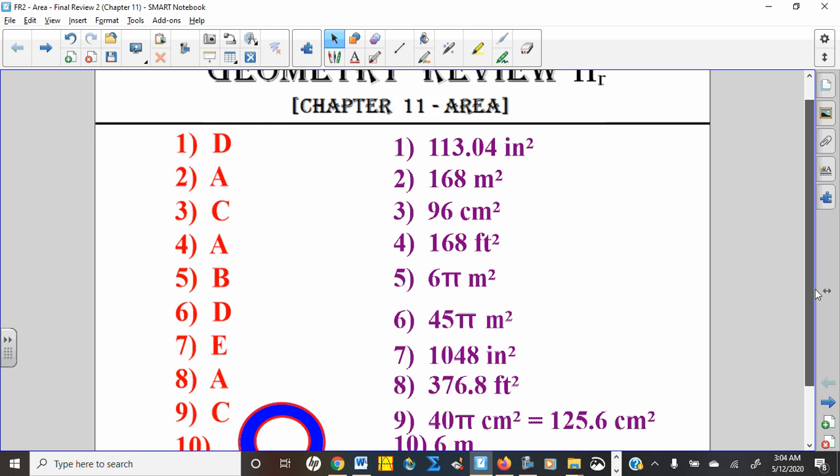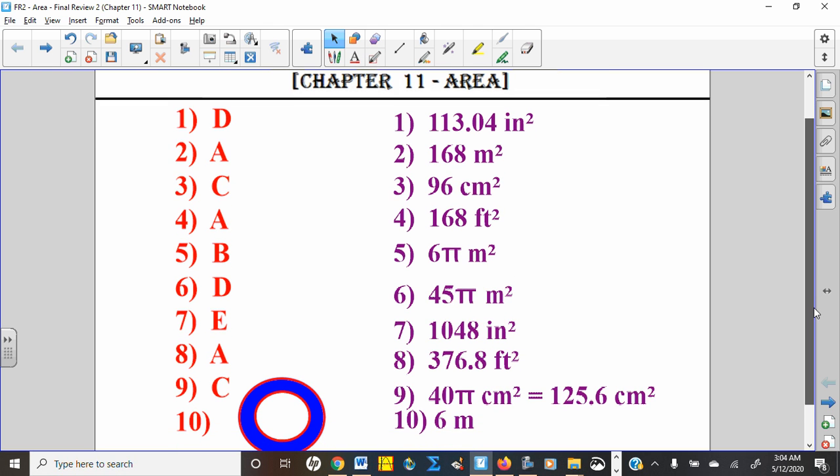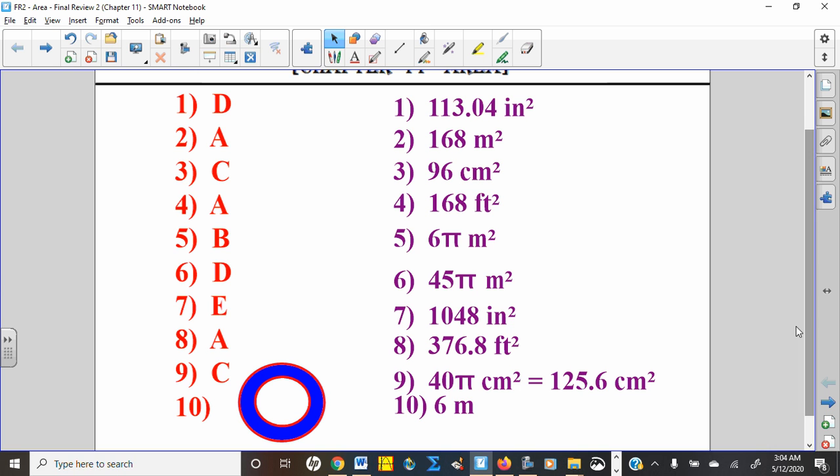And number 10, you had to draw a little picture, and then there was on the back page 10 problems where you were working them out mostly to find areas. Number 10, you had to work backwards to find the radius.